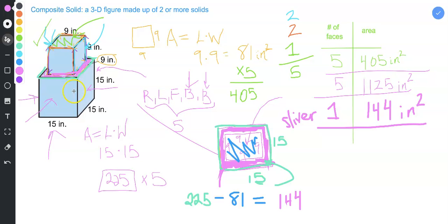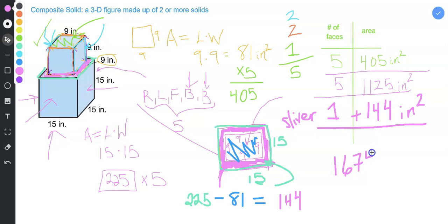So from here, we have found the area of every single face. So we can add up all of these areas to find the total surface area of this composite solid. So we had 405 plus 1,125 plus 144 to get our final answer of 1,674 square inches.